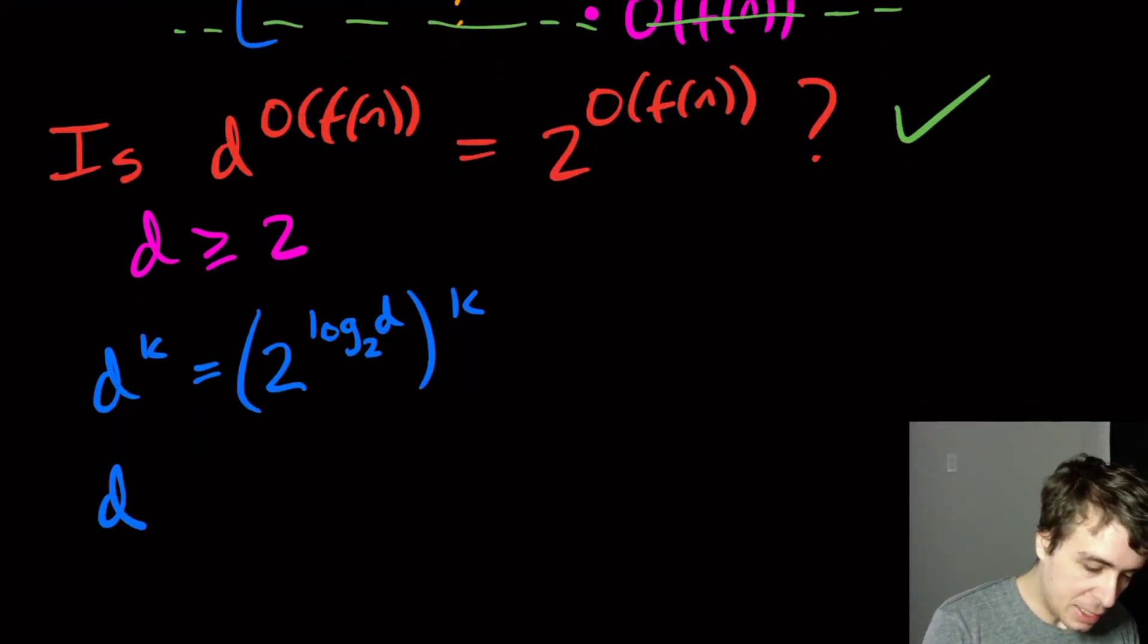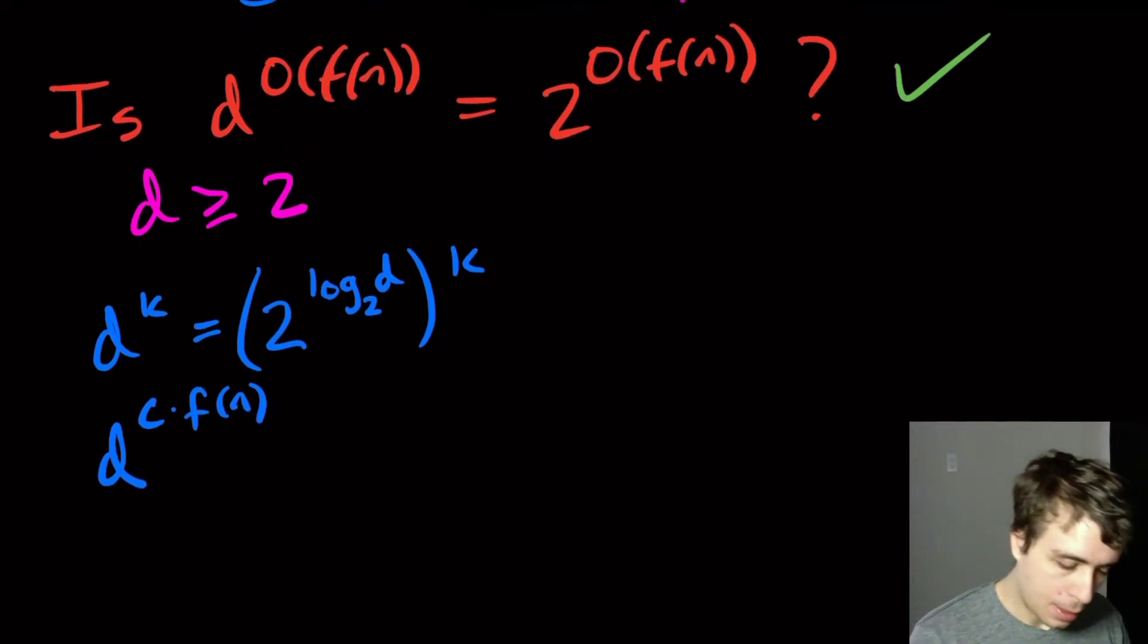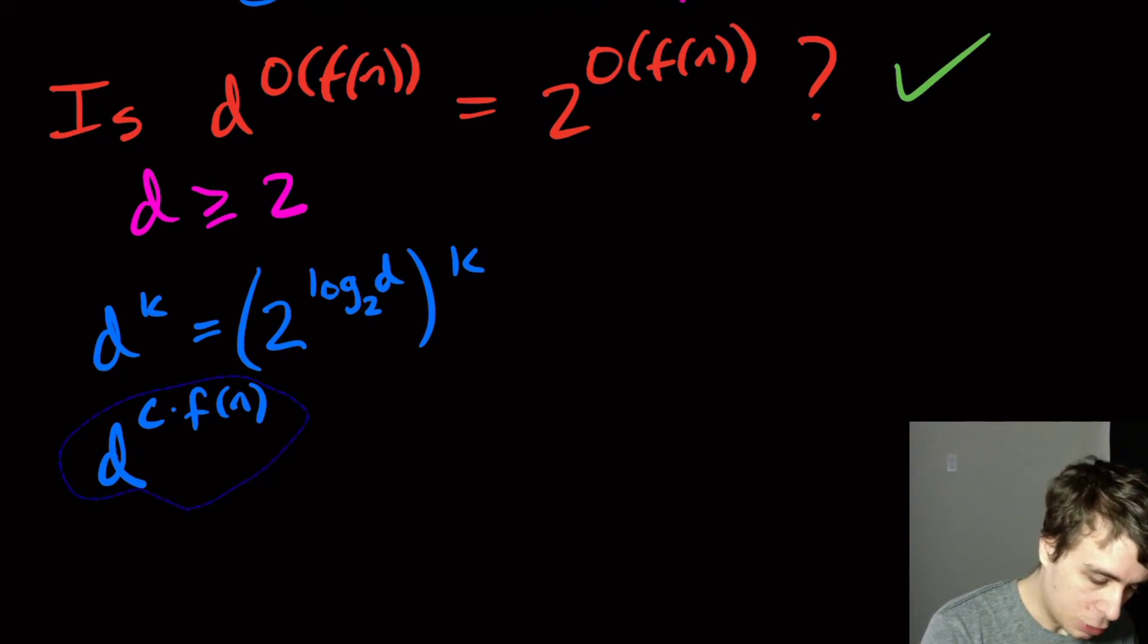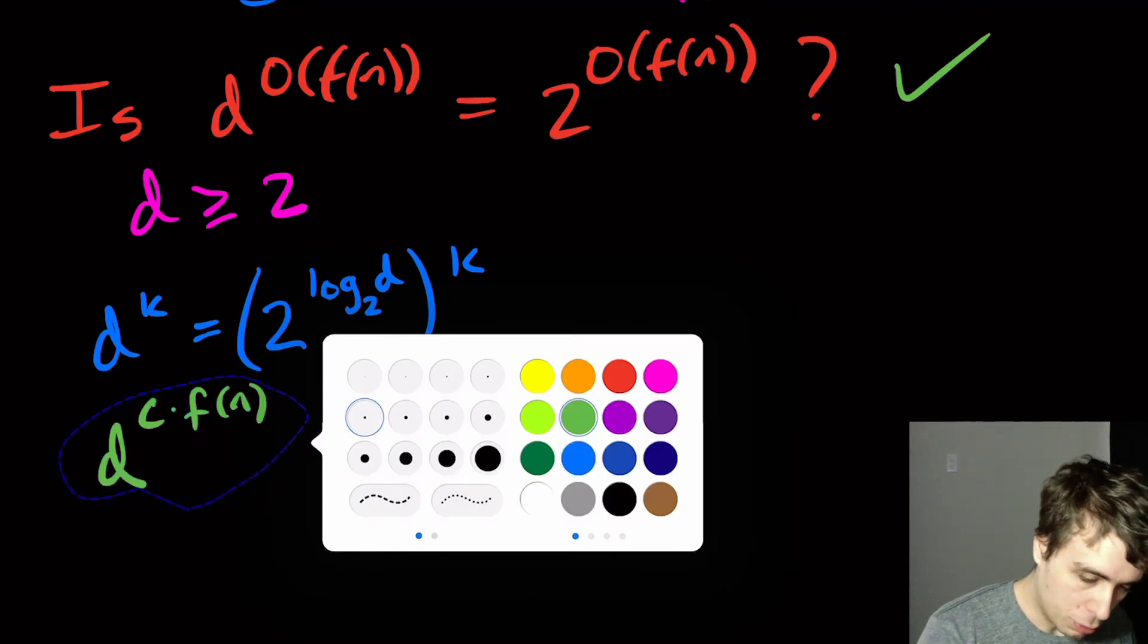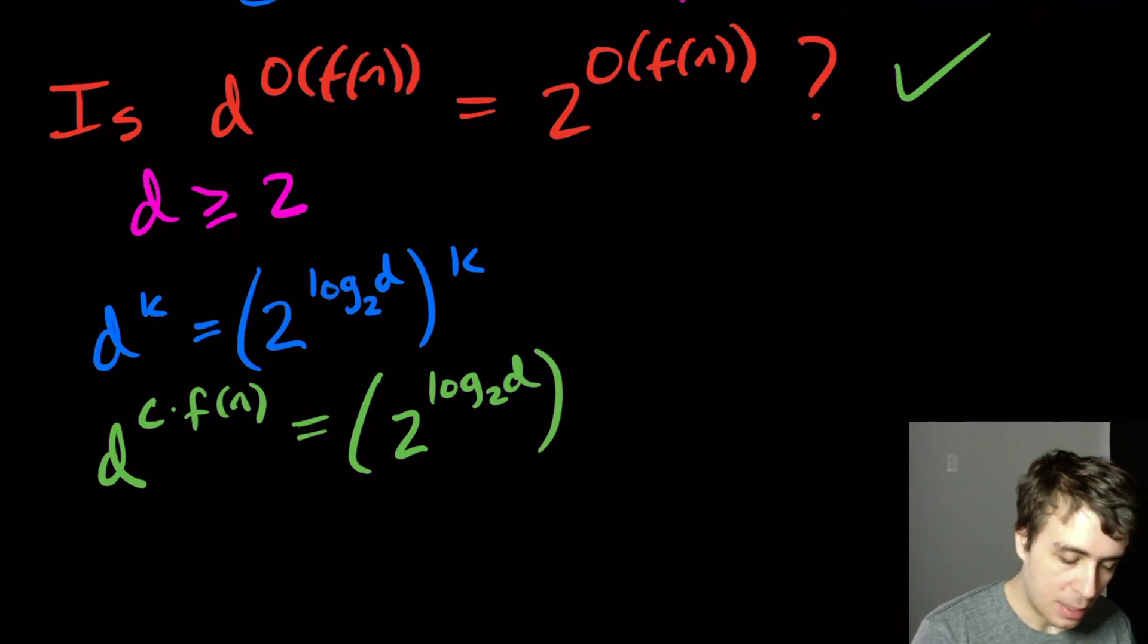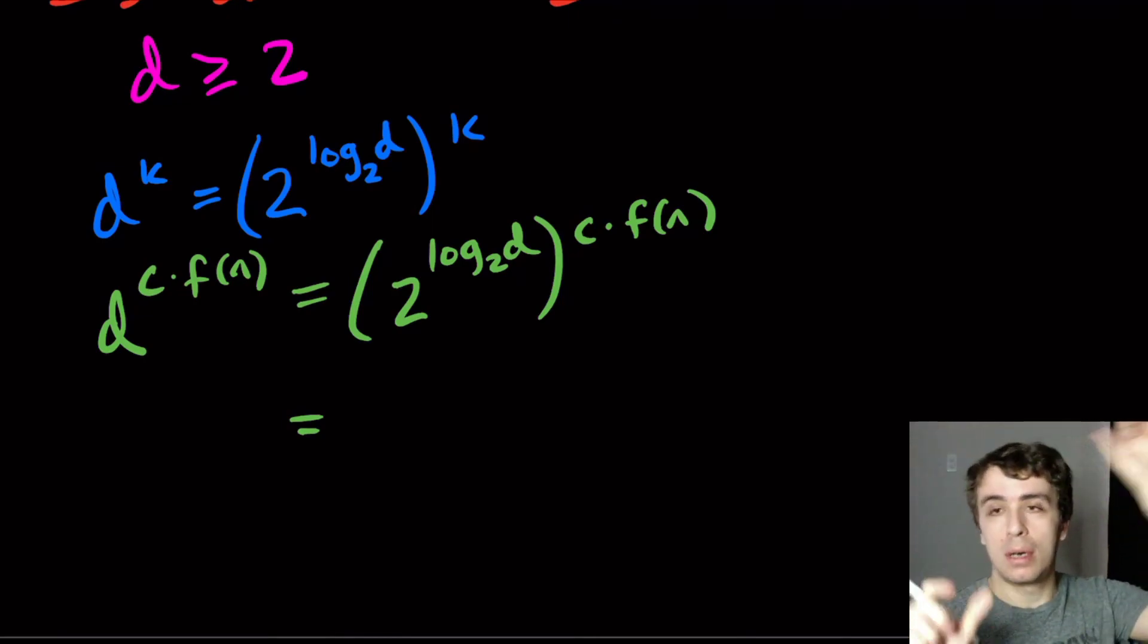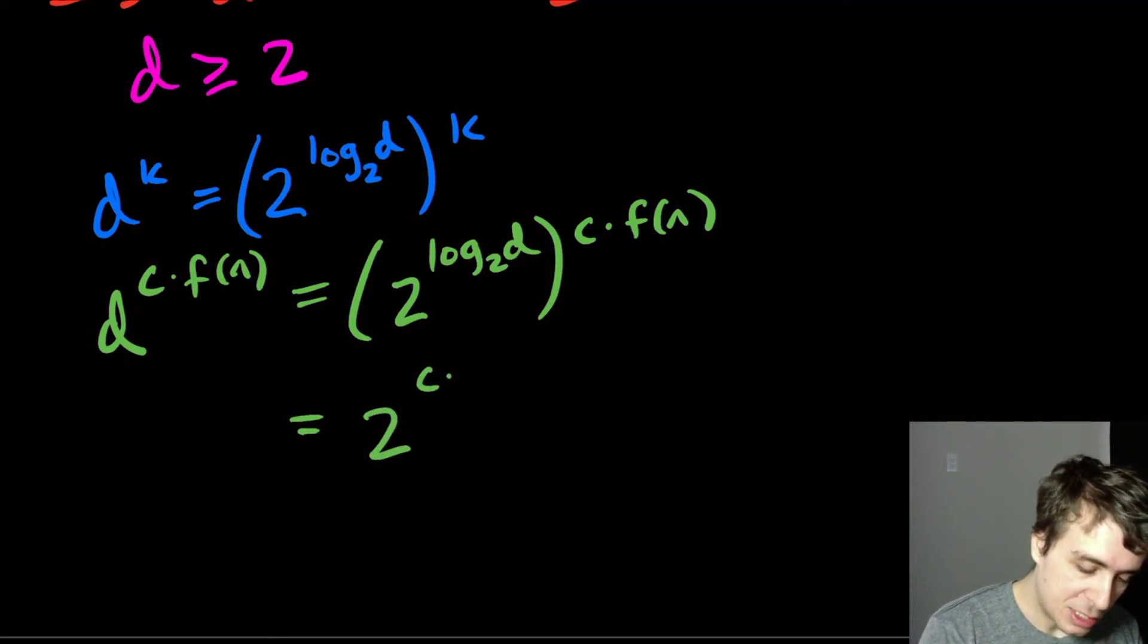So what we get is that D to the, let's call it C times f(n), where the constant upstairs here is C. I'm just giving it a name. So then we'll just use our little trick right here. In fact, I'm going to change color here. So let's change this to green. And then we'll just use our little trick. So this says we have 2 to the log base two of D, that's what the D parameter is, times C times f(n) upstairs. And this may look horribly confusing, but let's see. So when we have a power and then outside power like this, we multiply the powers together. So this is the same thing as saying 2 to the C times log base two of D times f(n).